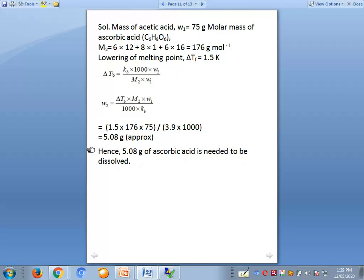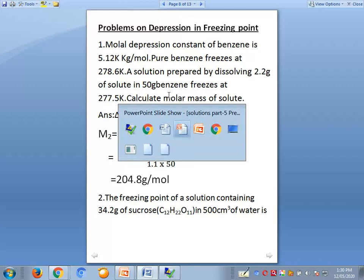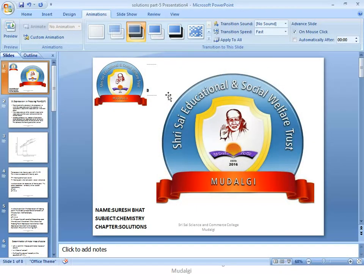We have solved four types of problems related to depression in freezing point. This topic is important — question number 28a will likely be a numerical on colligative properties worth three marks. First, write down the given things clearly, identify the formula, substitute the values, and don't forget to include the SI units after your calculation.